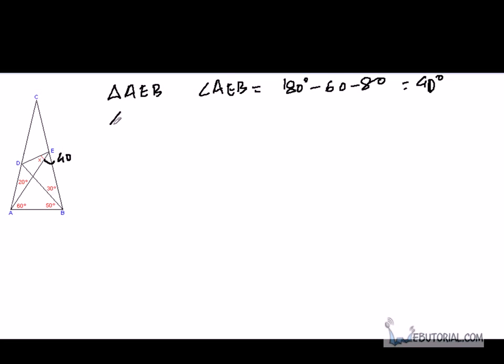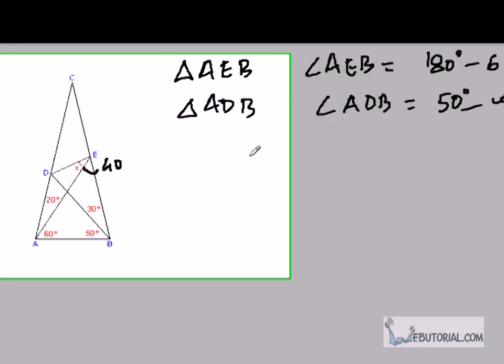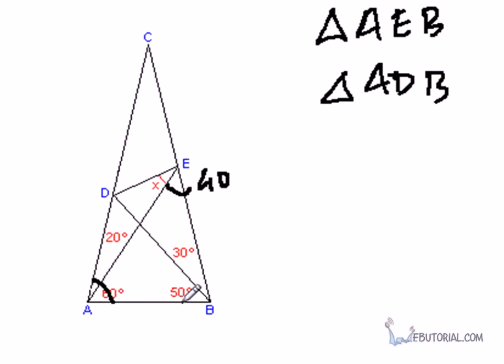Similarly, in triangle ADB, we can see that angle ADB will be 50 degrees. This angle is 80, this angle is 50, so this angle also has to be 50 degrees. What is important here is that if this is 50 and this is 50, then this side must be equal to the same as this side.